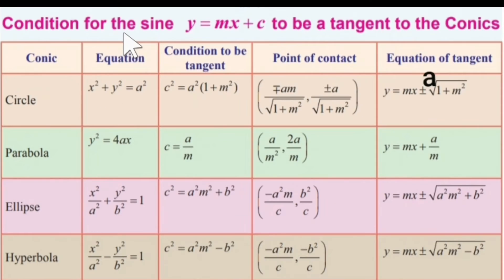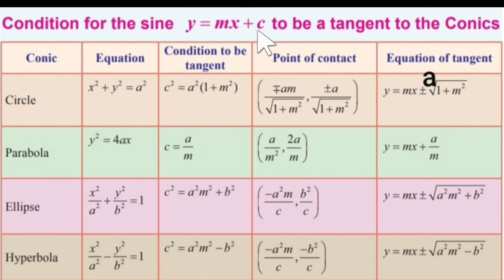Now let us see the condition for the line y equal to mx plus c to be a tangent to the conics. A tangent is a straight line, and the equation is y equal to mx plus c. Not all straight lines are tangents; a particular condition must be satisfied. We are going to discuss the condition for tangency for all conics.